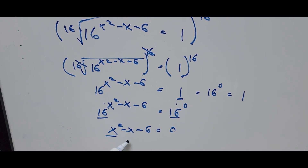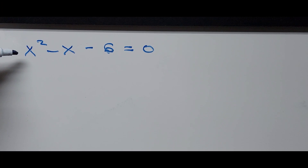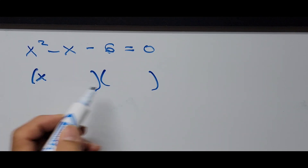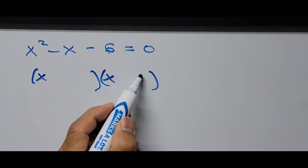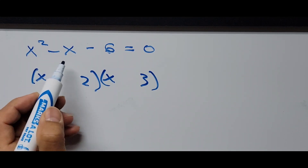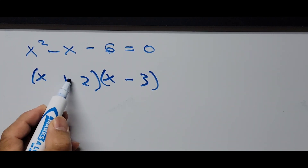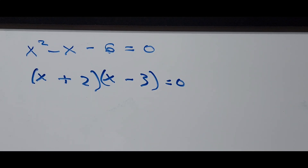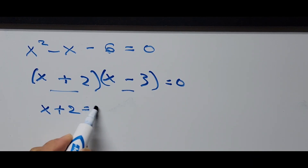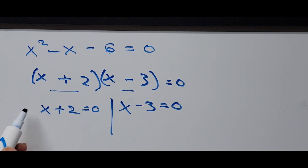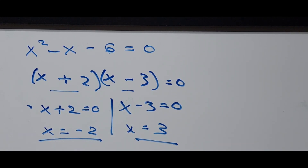We can use factoring or the quadratic formula to solve for x. Using factoring: the factors of x squared give x and x, and the factors of 6 are 3 and 2. Since the second term is negative, we get x plus 2 equals 0 and x minus 3 equals 0. Solving: x equals negative 2 and x equals 3.